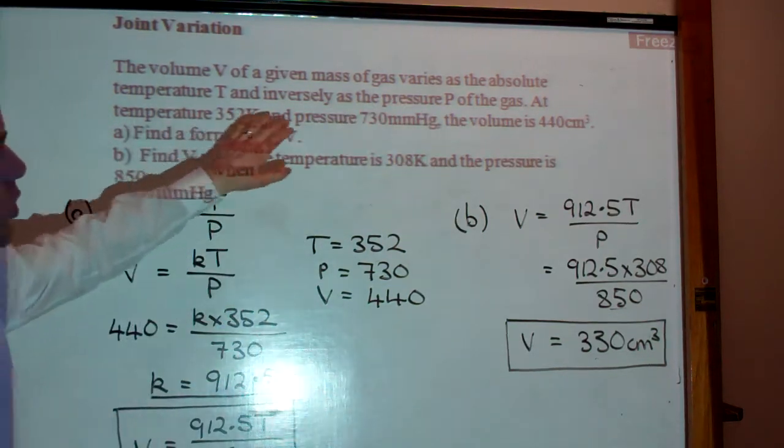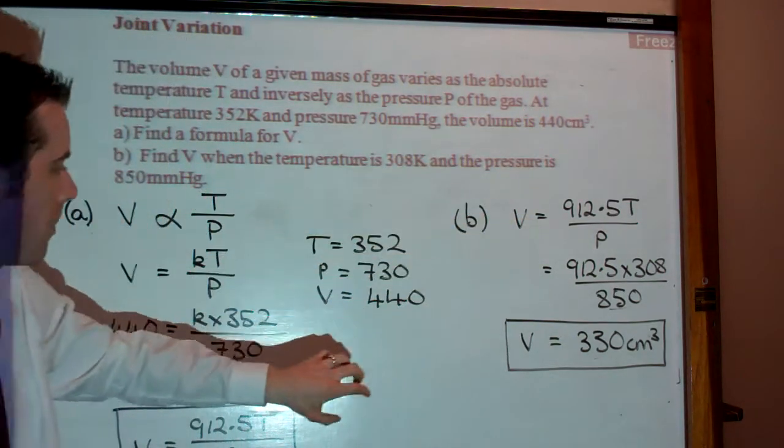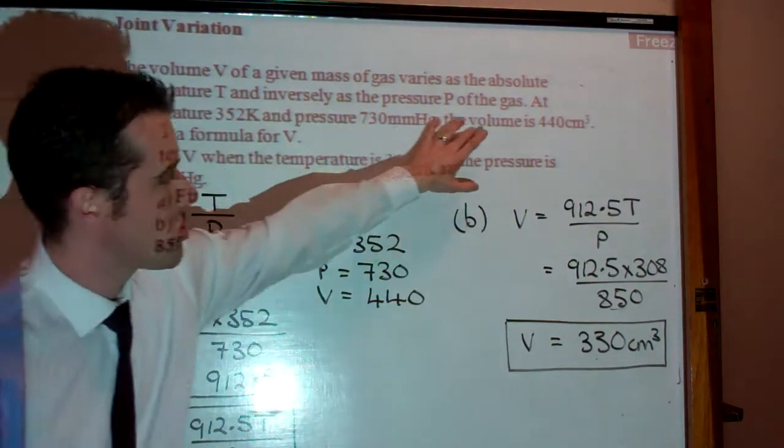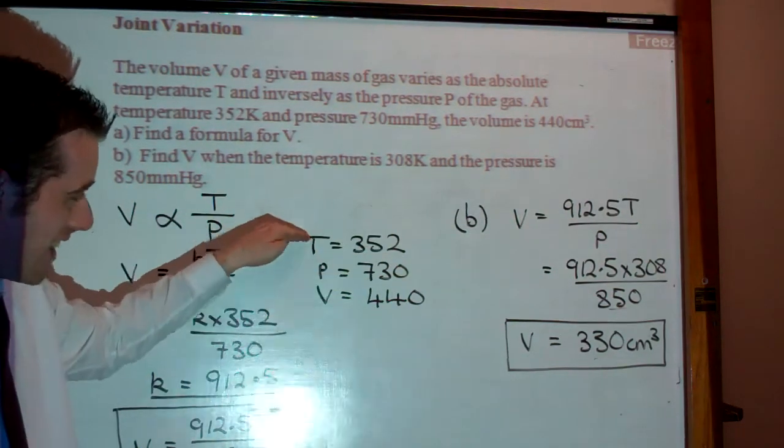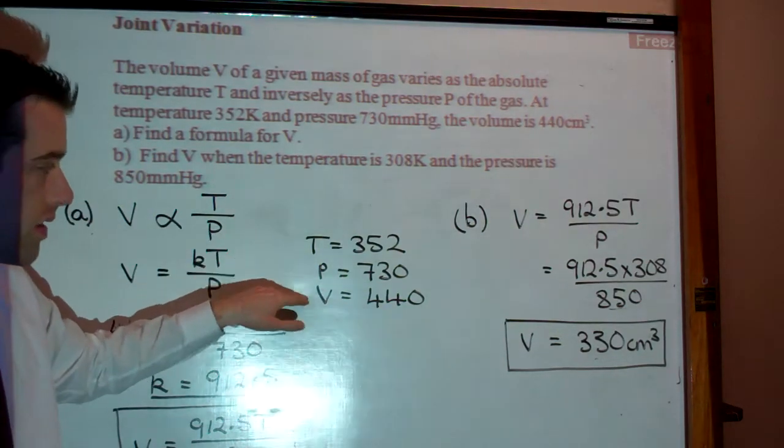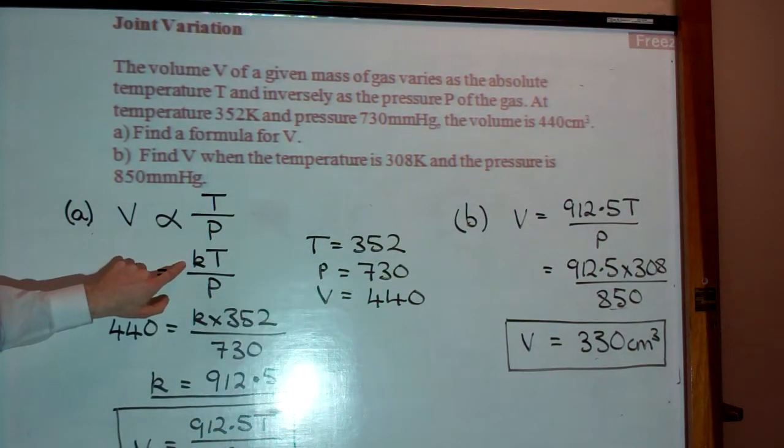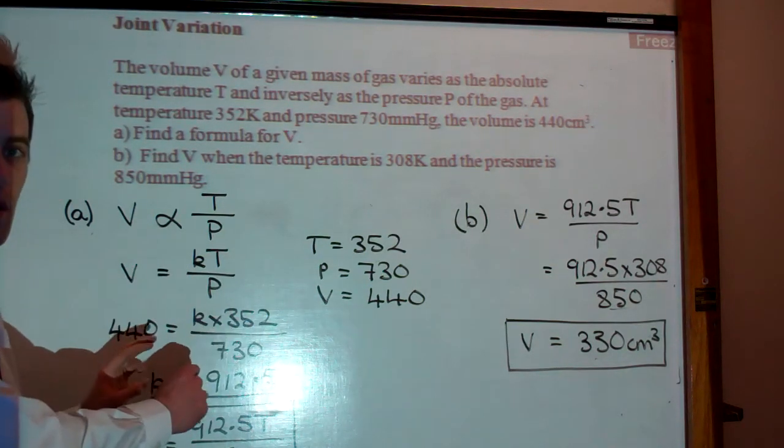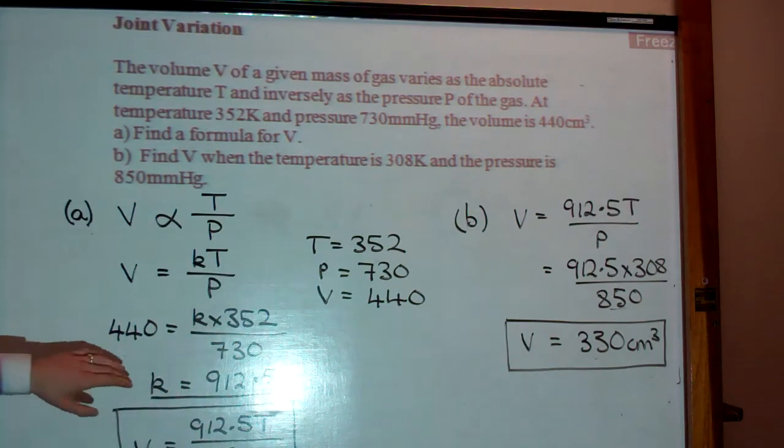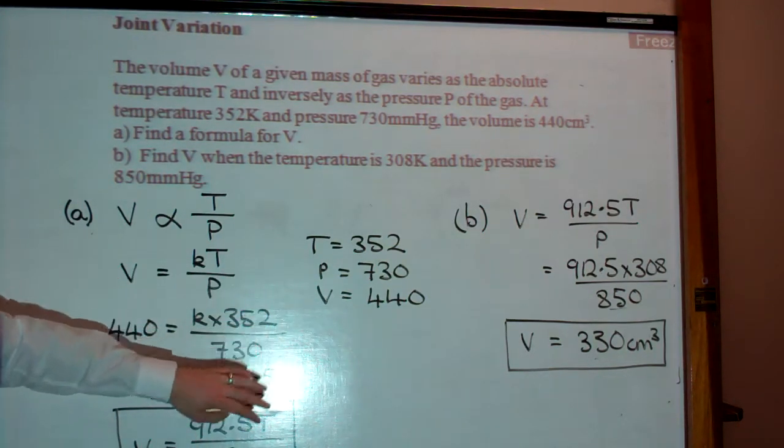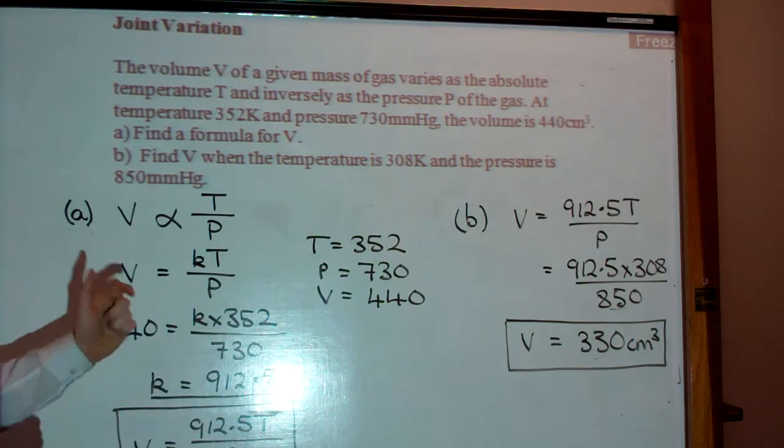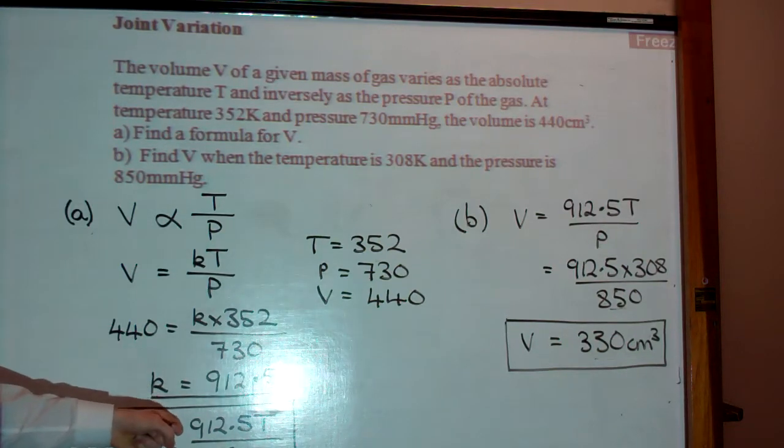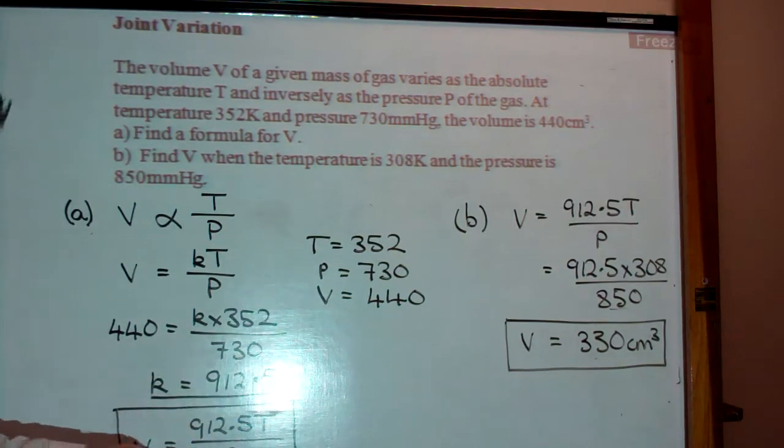At temperature 352, so after the first sentence we're given information, which is this information here. And all I've done is I've broken down the second sentence of information into just exactly what that's given us. It's given us the three variables for one situation, allowing us to work out K. So our K value is 912.5, please try that, make sure you get it. If you want me to break down that process for you, I will do, I'm just going through that quickly for time. So that's a relationship, okay, the formula for V is 912.5 times T all over P.